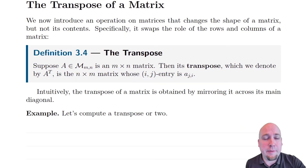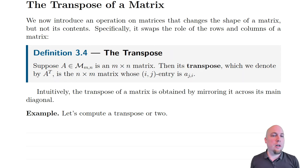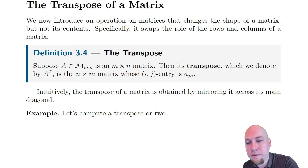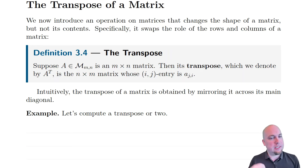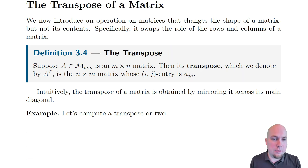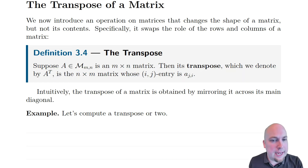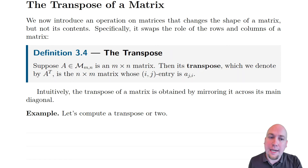So what the transpose of a matrix is, is an operation that just interchanges the rows and columns of that matrix. So if you've got some m by n matrix to start with, then its transpose is now an n by m matrix. It used to have m rows and n columns, now it has n rows and m columns. The way you get it is you just interchange the row and column indices, so whereas the ij entry used to be a_ij, now the ij entry is a_ji.